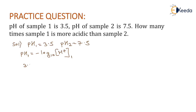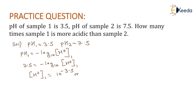According to the given data, pH of sample 1 equals 3.5, and the formula is: 3.5 = -log₁₀[H⁺]₁. From this, we determine the concentration of H⁺ of sample 1, which equals 10 to the power of -3.5 moles per liter.